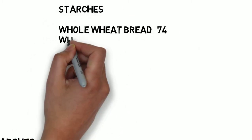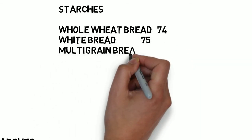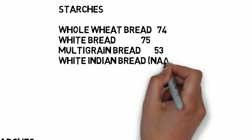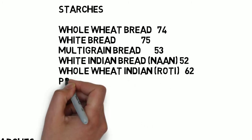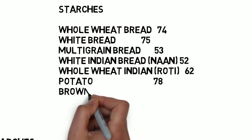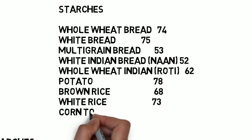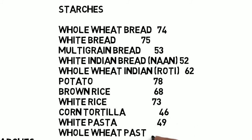Here are some examples showing that the glycemic index is not that intuitive. First, let's start with some starches. Whole wheat bread, 74. White bread, 75. Multi-grain bread, 53. White Indian bread or naan is 52. Whole wheat or roti, 62. Boiled potatoes, 78. Brown rice, 68. White rice, 73. Corn tortilla, 46. White pasta, 49. Whole wheat pasta, 48.